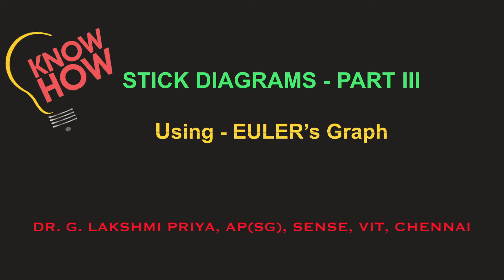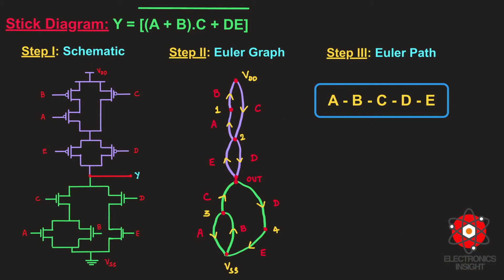Now let us continue with how to draw stick diagrams for a given boolean logic function. In the previous video we represented the boolean function as a static CMOS schematic, obtained the Euler graph, and traced the common Euler path by keeping two conditions in mind: traverse each branch exactly once, and have identical input ordering for both pull-up and pull-down networks. We arrived at the common Euler path: A→B, B→C, C→D, D→E.